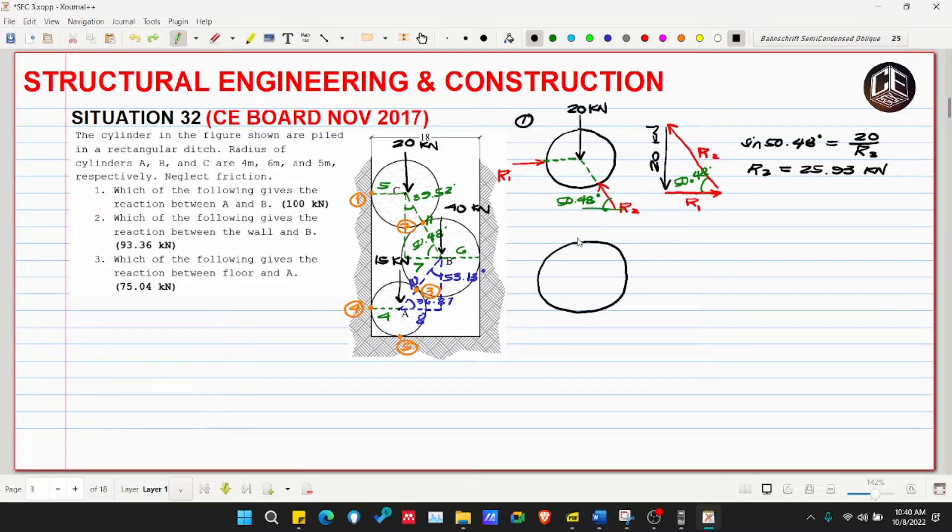Let's make a concurrent force system. This is point C and this is point B. This is our 40 kilonewton weight. This is our R3, which is what number 1 is asking for. And this is our R2, which is 25.93 kilonewtons. This is the x-axis and y-axis. The angle of R3 with respect to horizontal is 36.87 degrees. This one with respect to horizontal is 50.48 degrees.